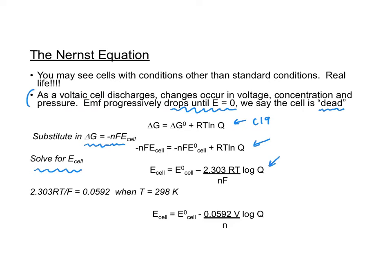Now that's very cumbersome to handle. So what we do is we take that factor 2.303 RT divided by F. When temperature is equal to 298 K, the value comes up to be 0.0592. This will be our working equation and we're going to use it a lot. So that is given on the exam. Know how to use it.